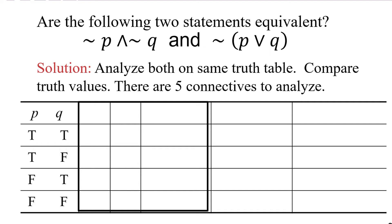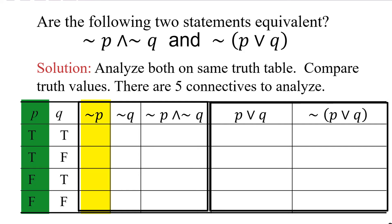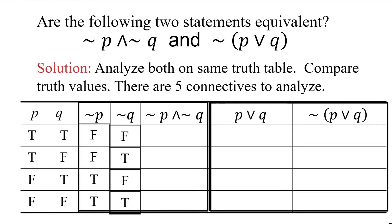So let's start with the statement on the left, negation P and negation Q. Once again, we're going to need the negation of P, then the negation of Q, and then the whole statement. For the statement on the right, we're going to need P or Q first because it's in parentheses, and then we're going to need the negation of P or Q. The negation of P is the opposite of the values in the P column: false, false, true, true. The negation of Q is the opposite of the values in the Q column: false, true, false, true.